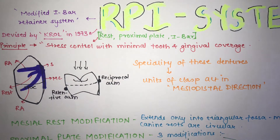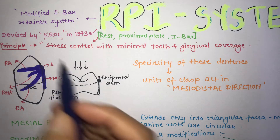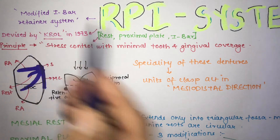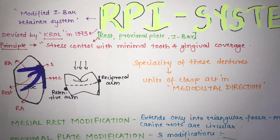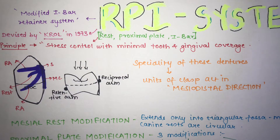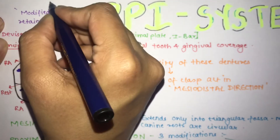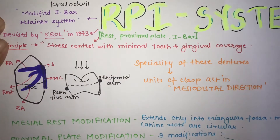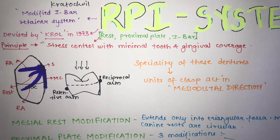The RPI system was devised by Crawl in 1973 and is a modified type of I-bar retainer system. The I-bar system itself was designed by Kato Chival in 1963 to reduce the tooth contact of the retainer, as conventional retainers contact the abutment teeth excessively.